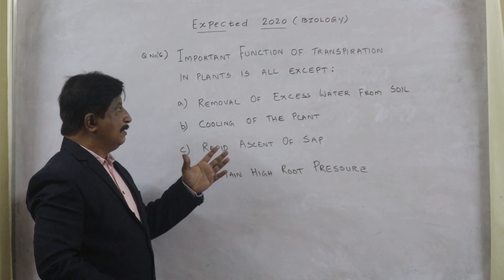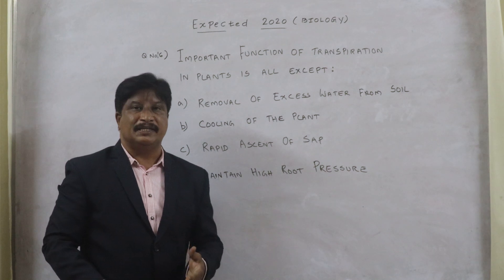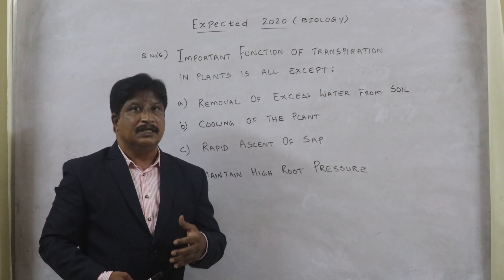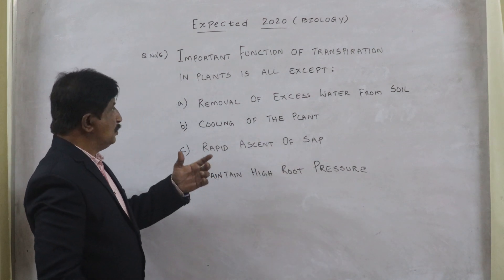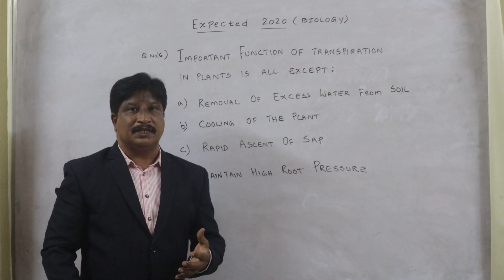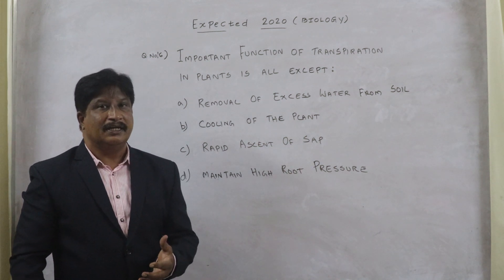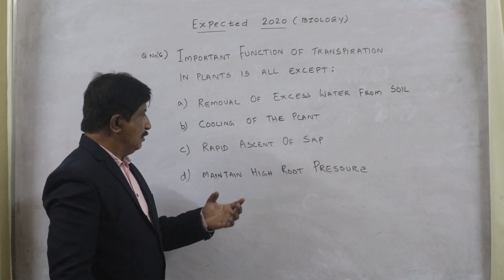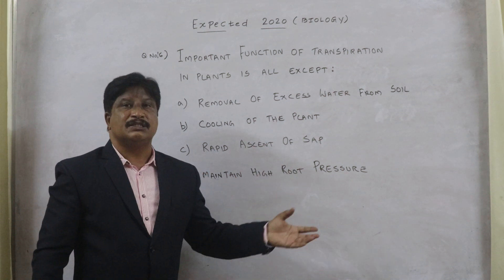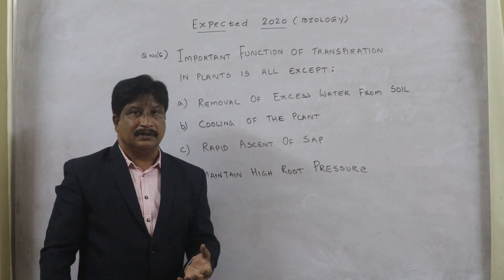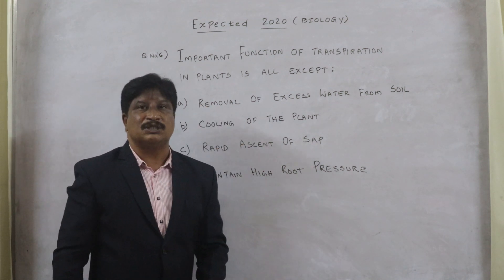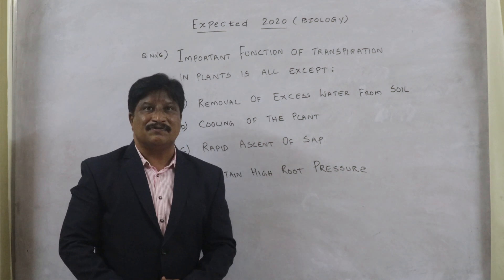Transpiration aids in the uptake of material from the soil to the higher parts of the plant — in other words, to the canopy. Second, transpiration brings down the temperature of the canopy by around two to three degrees. The third important function of transpiration is that it maintains a high root pressure.